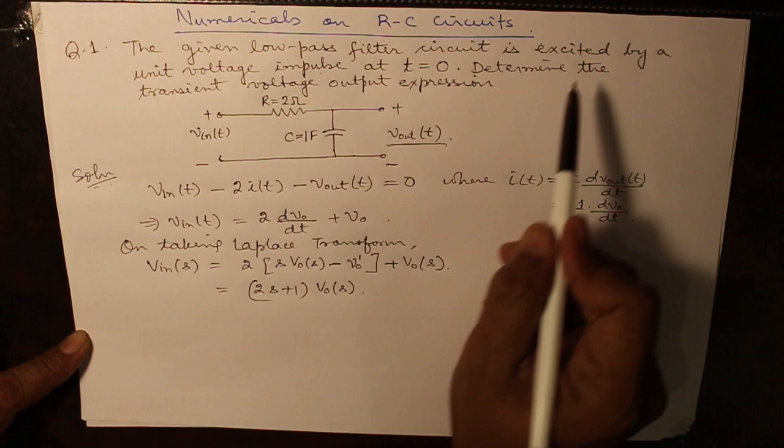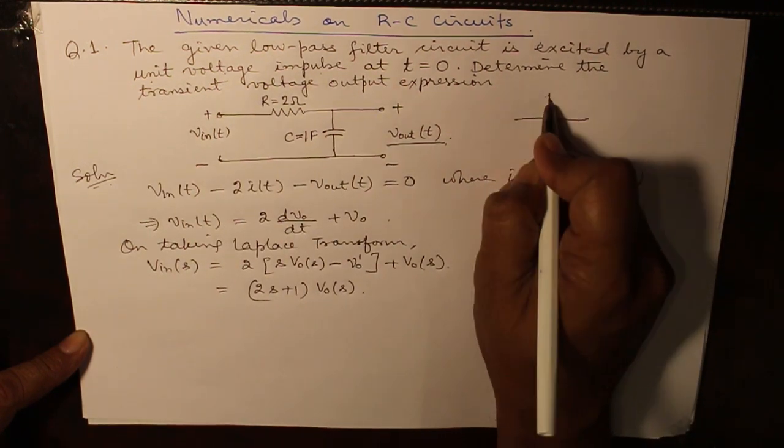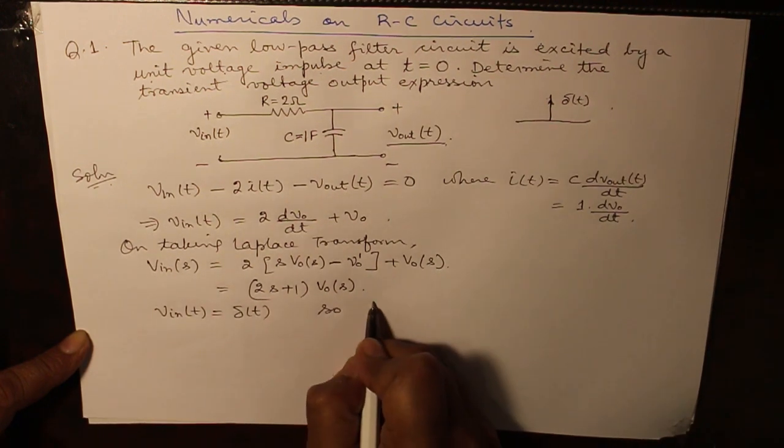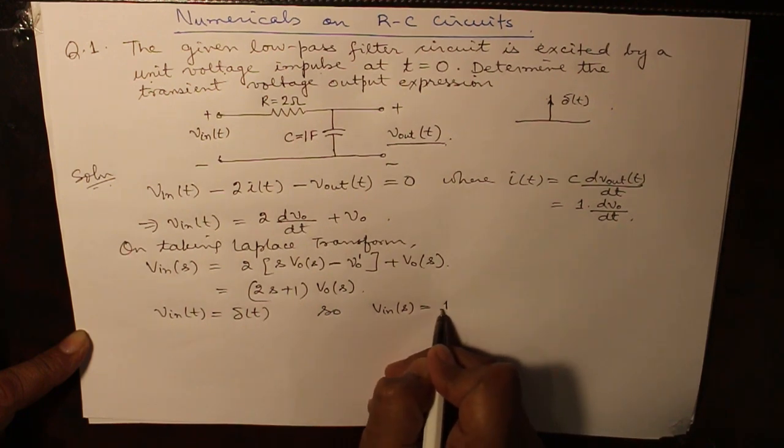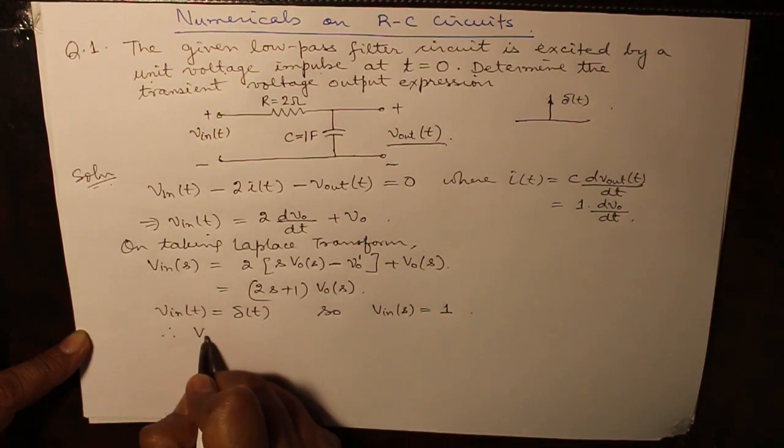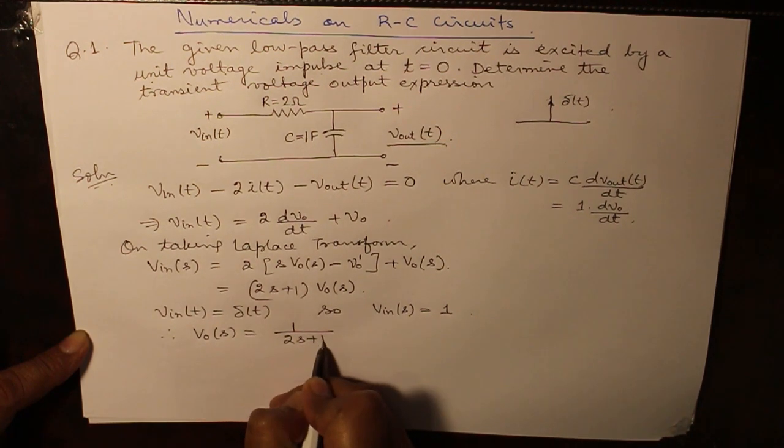Now, the input is a unit voltage impulse delta(t), its Laplace is 1. Therefore, putting this value here, V_0(s) becomes 1 over 2s plus 1.